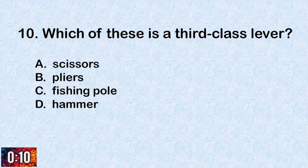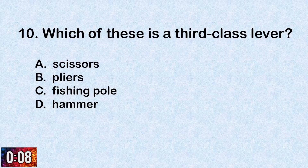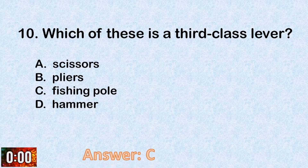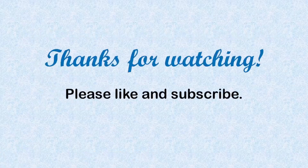Number ten: Which of these is a third-class lever? A. Scissors. B. Pliers. C. Fishing pole. The correct answer is letter C, fishing pole.